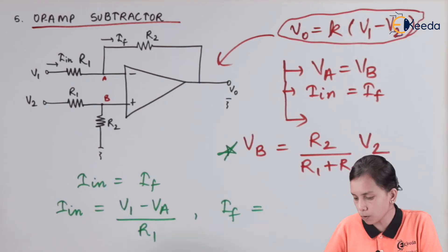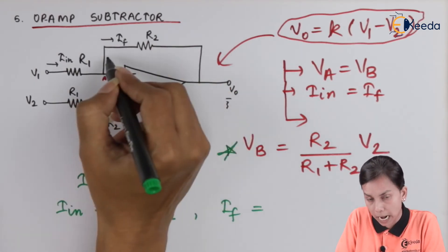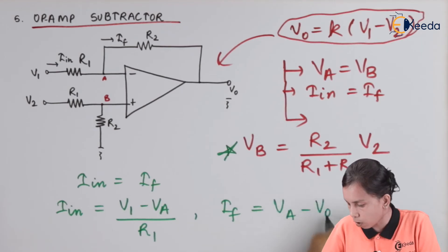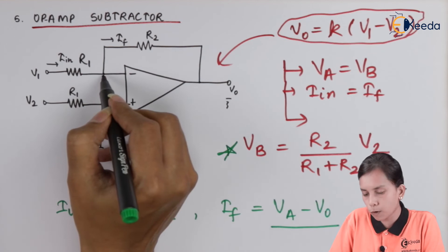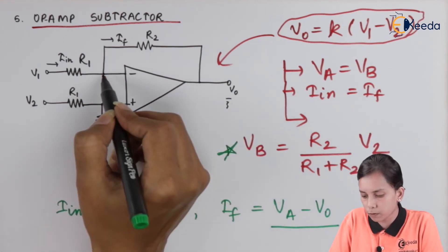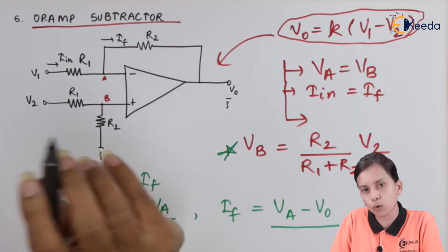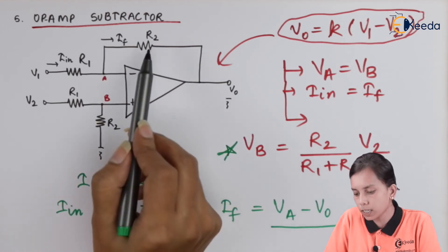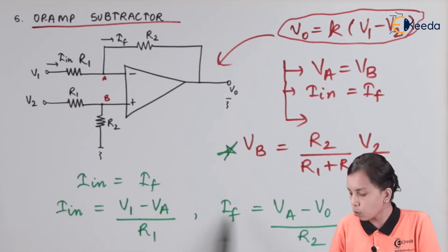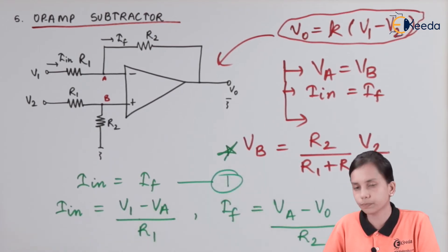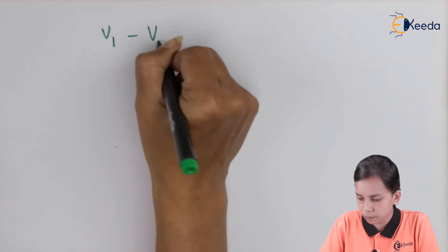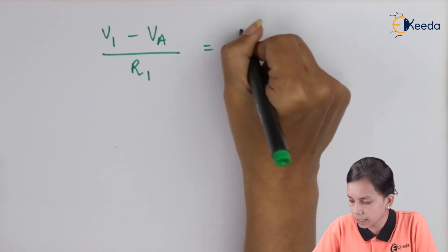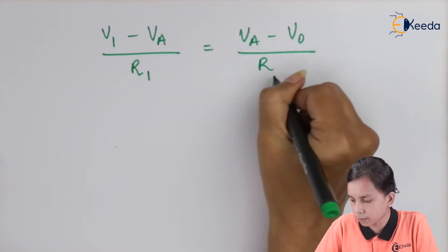Similarly, I_F is the current flowing through resistor R2 in the feedback branch. The two nodes are VA and V0. Since current flows from high to low, and VA is the higher voltage, we write I_F = (VA − V0) / R2. We now place both expressions into our equation: (V1 − VA) / R1 = (VA − V0) / R2.